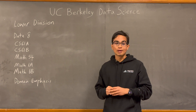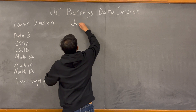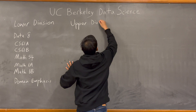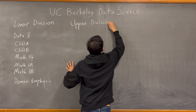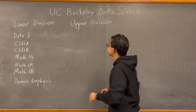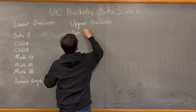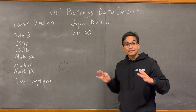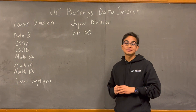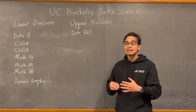Now let's move on to the Upper Division requirements. Firstly, Data 100. You can think of Data 100 as Advanced Data Science. This is arguably the most important class in the Data Science major, and will teach you everything from Python, Pandas, and NumPy to machine learning.